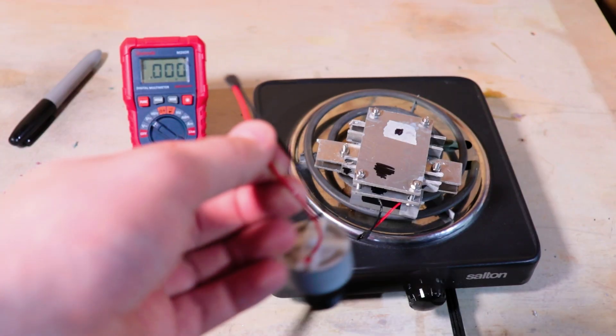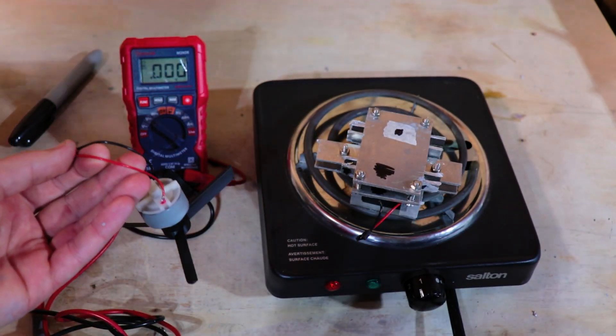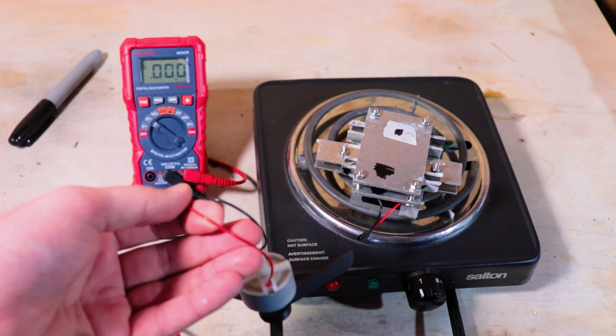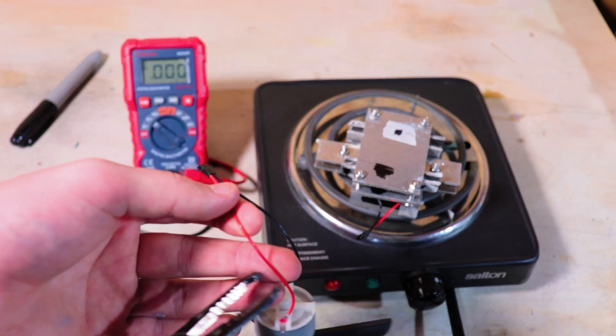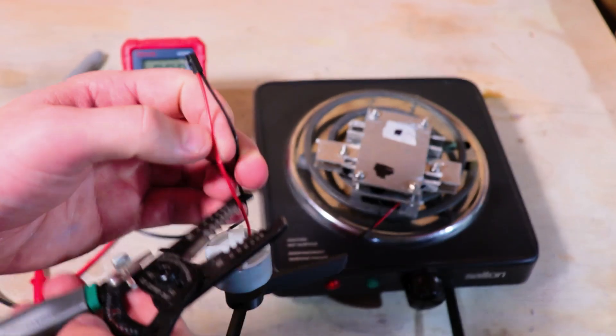To get some consistent results, I took the setup inside to place on a hot plate where we could better keep the temperature steady, and since I was curious what the current draw of the motor was, I just cut the wires so I could hook my ammeter up in series.